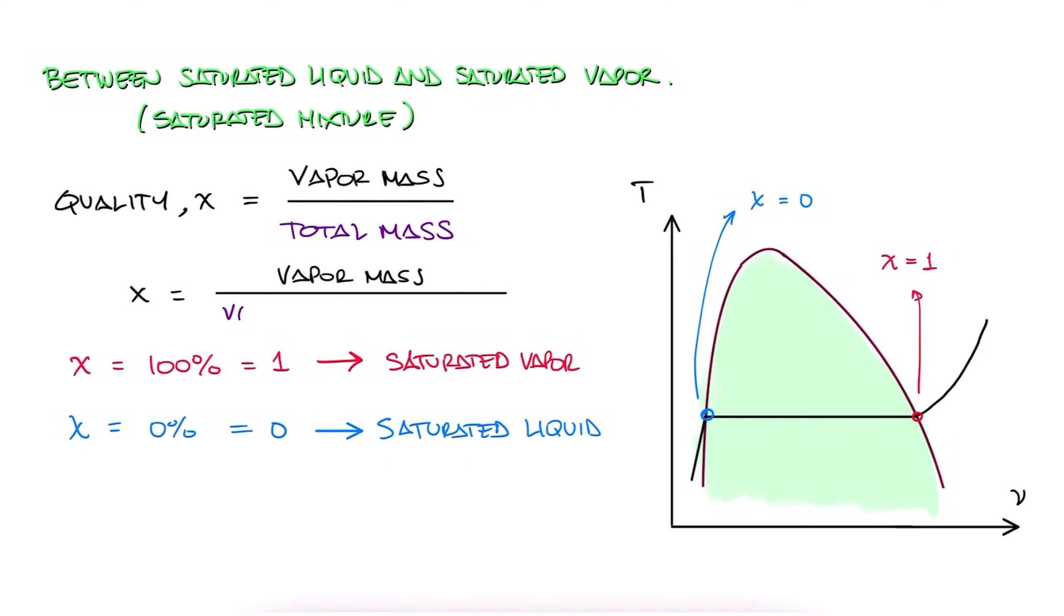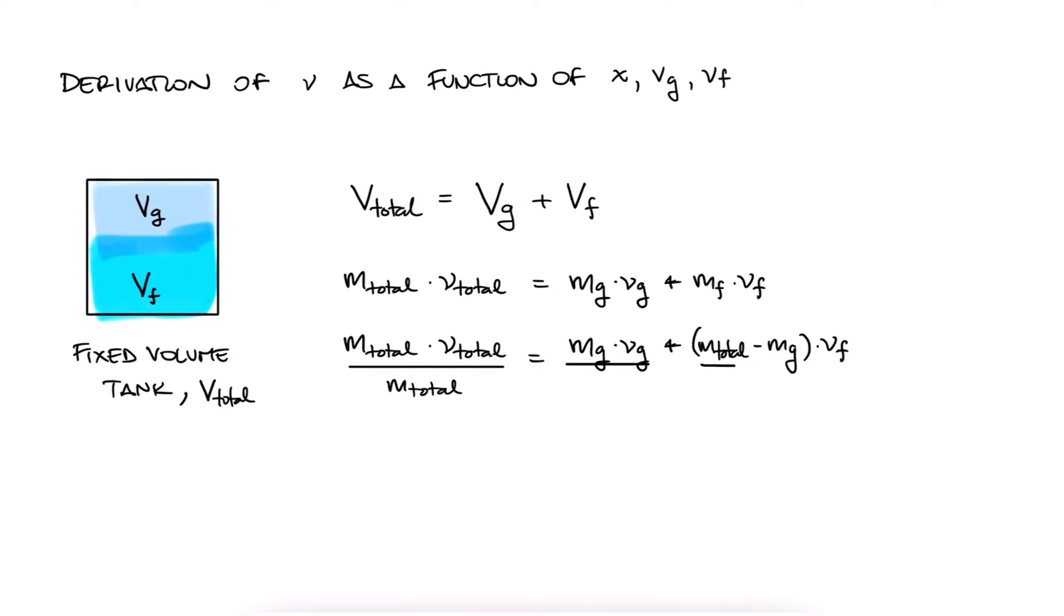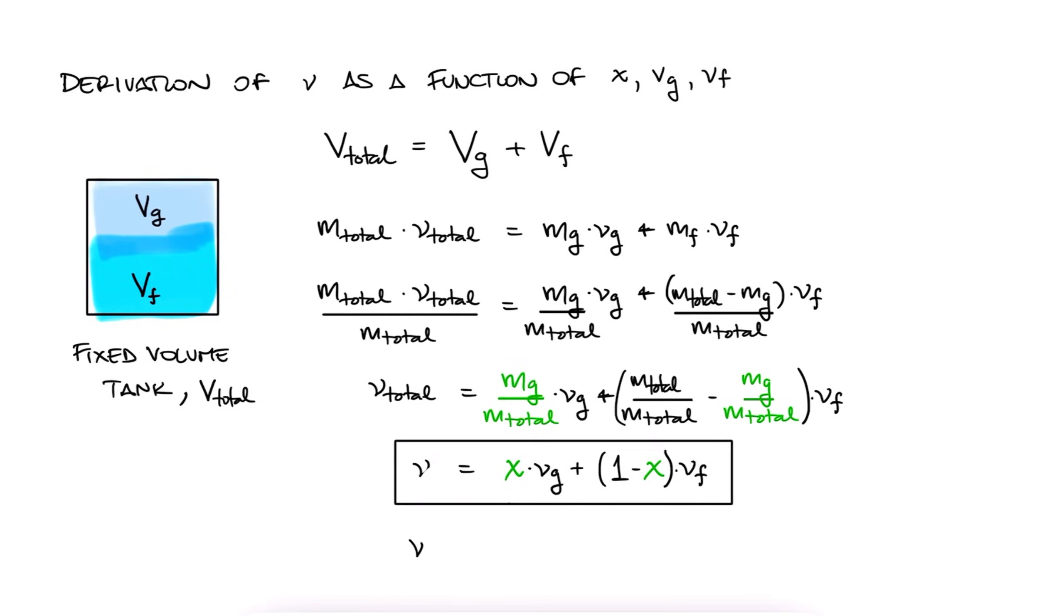The total mass is the mass of the fluid, plus the mass of the gas, or vapor. Defining this property is useful because for systems where we have a constant volume, finding the overall specific volume in terms of the specific volume of the saturated liquid, Vf, and the specific volume of the saturated vapor, Vg, is very straightforward. If the total volume of a saturated mixture is fixed, the volume is composed of Vg plus Vf. We can write the volume as the product of mass times specific volume for all three terms, write the mass of the fluid as the total mass minus the mass of the vapor, divide by total mass, and recognize that mg over total mass is our quality. This expression can be rearranged to V equals x times Vg minus Vf plus Vf.